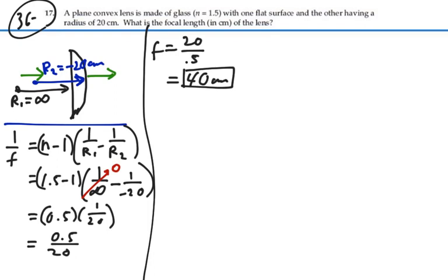That's a positive 40 centimeters. So this is a converging lens, which makes sense, because it's thicker in the middle than it is on the outer portion of the lens.